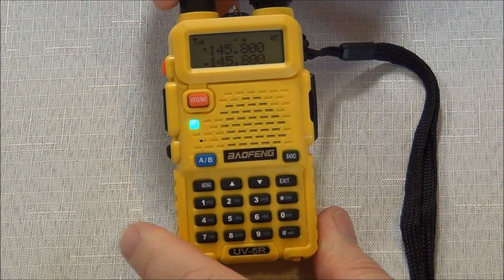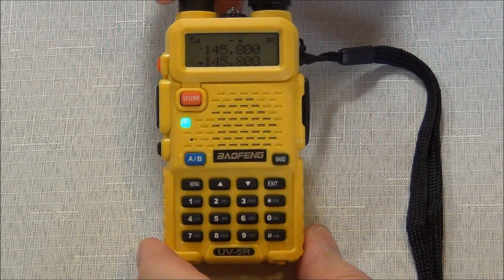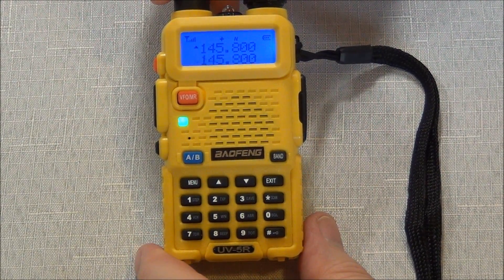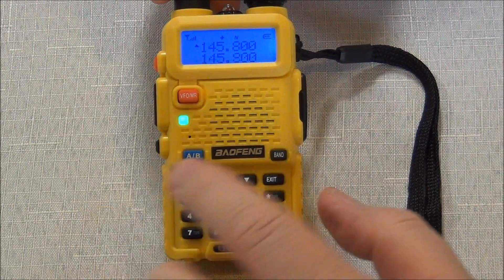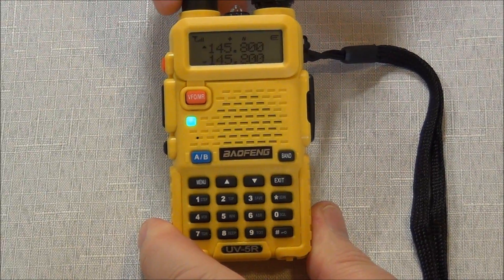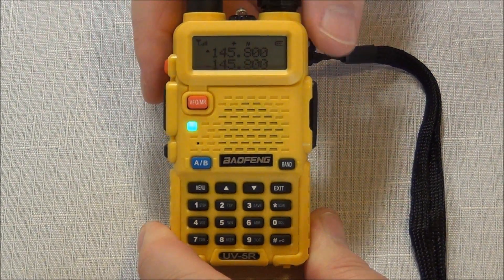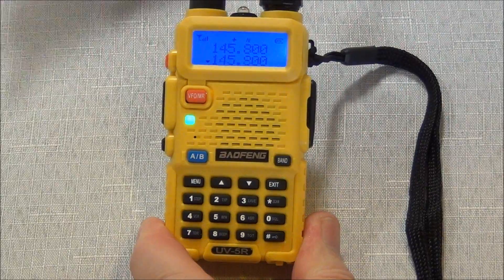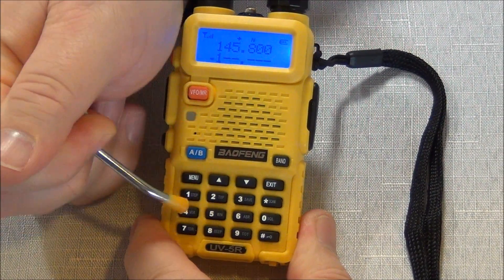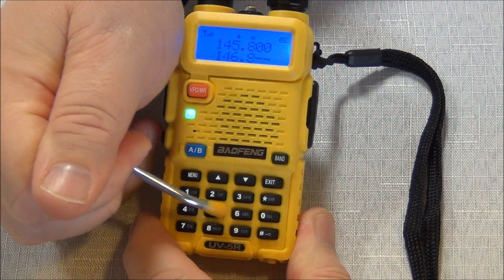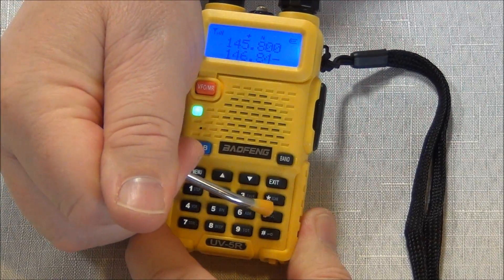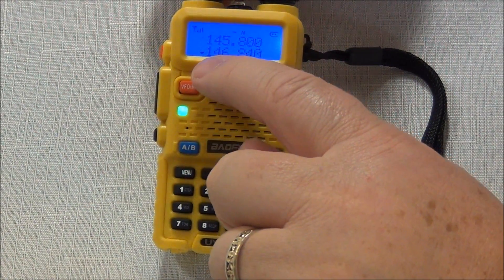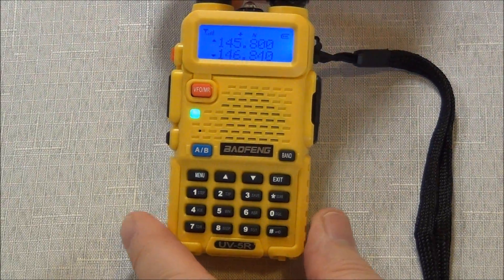The first step you want to do is to make sure the radio is in the band that you're programming the repeater for. I'm going to be programming a VHF repeater. Steps are exactly the same for the UHF receiver, except you select the band first. And the repeater that I'm going to program in, its listening frequency is 146.840. So I'm going to program that in here: 146.840. And you can see there we got 146.840.